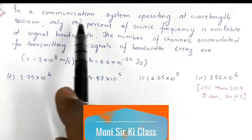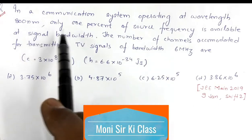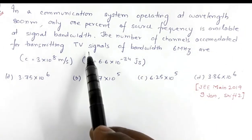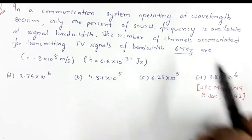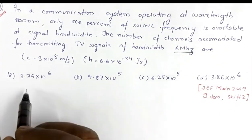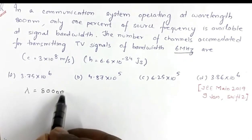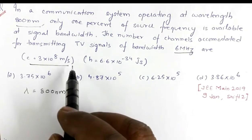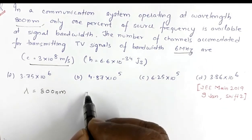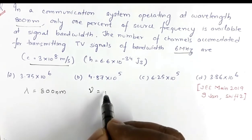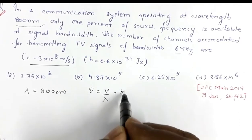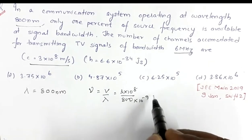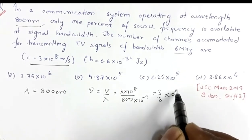In this question, we have a communication system operating at wavelength 800 nanometer. Only one percent of the source frequency is available as signal bandwidth, and we need to find the number of channels for transmitting TV signals of bandwidth 6 MHz. Wavelength is 800 nanometer and velocity of wave is 3×10⁸ m/s. From this, frequency ν = velocity/wavelength = 3×10⁸ / 800×10⁻⁹ = (3/8)×10¹⁵ Hz.